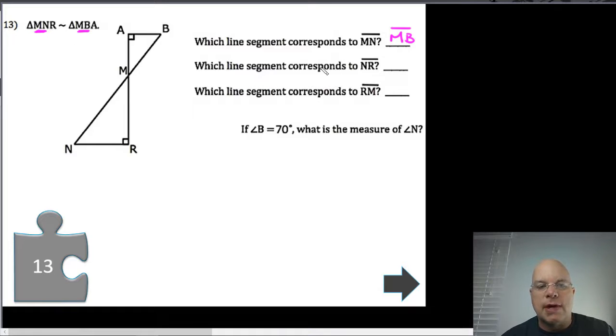Which line segment corresponds to NR? Well, NR are the final, the last two letters, so BA. NR is this smallest side of this large triangle, BA is the smallest side of a small triangle. Which line segment corresponds to RM? RM, first and last letters, MA, first and last letters, MA. RM is this medium-sized leg, and MA is the medium-sized leg of the other right triangle.